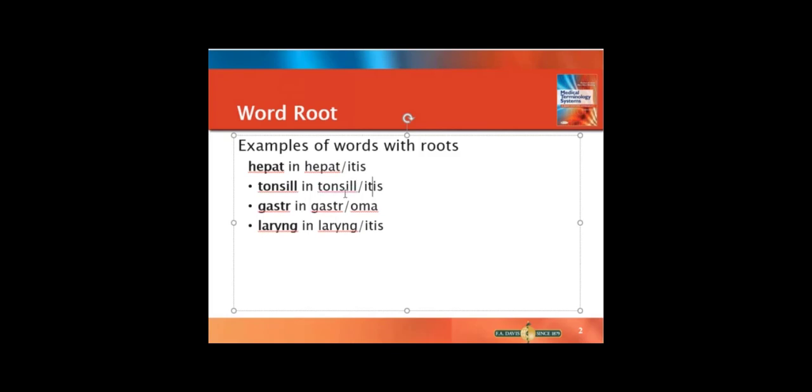It really is this easy. You break words down. You never look at the entire word or it'll overwhelm you. So I'll go ahead and go through this. OMA means cancer or tumor. Gastro means stomach. So cancer or tumor of the stomach. Itis inflammation or infection. Laryngeal is the area of your voice box. So there'd be infection or inflammation of the voice box.